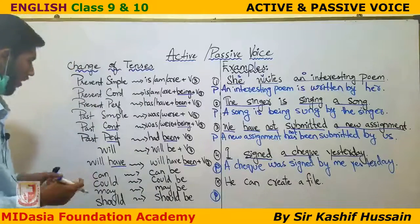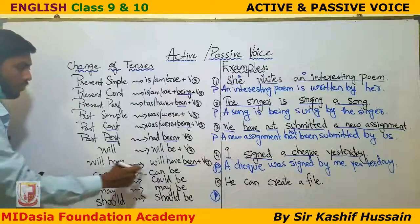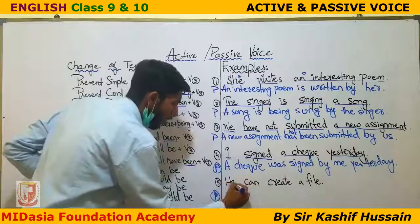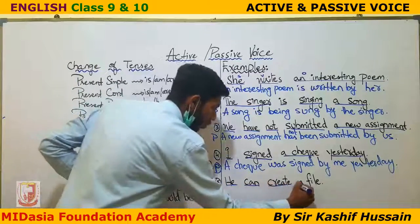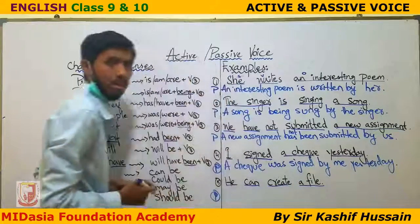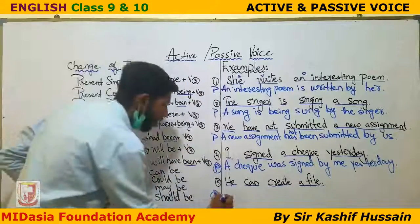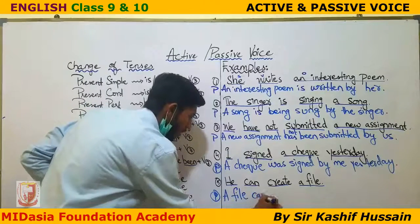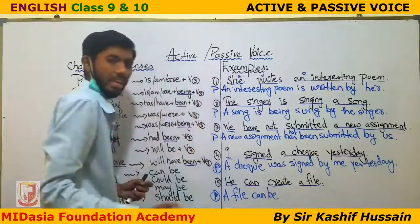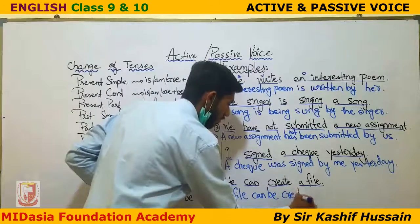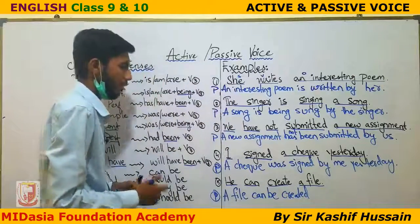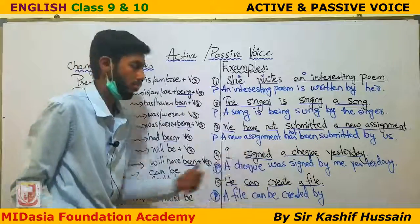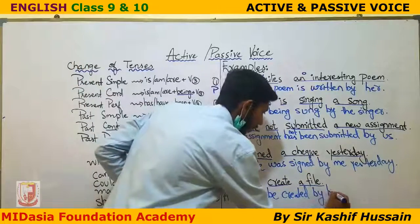The last sentence: 'He can create a file.' This has a modal verb. 'He' is the subject, 'can' is the modal verb, 'create' is the verb, and 'a file' is the object. First, take the object: 'a file.' Then use 'can be' plus the third form of 'create', which is 'created.' The passive form is: 'A file can be created by him.' We change 'he' to 'him.'